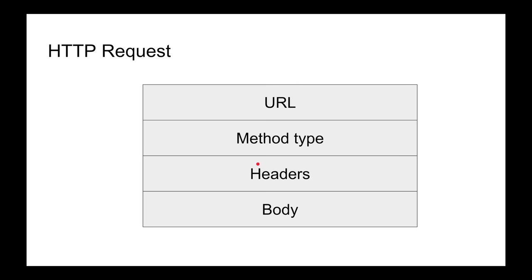An HTTP request has four main properties. First, the URL — for example, http://hussainnasser.com or http://google.com or twitter.com/HNasr. The URL has a lot of components including the path and arguments. Second, the method — you have to tell me what method you're using. Methods include GET, POST, PUT, DELETE, and OPTIONS, and each has a semantic meaning.